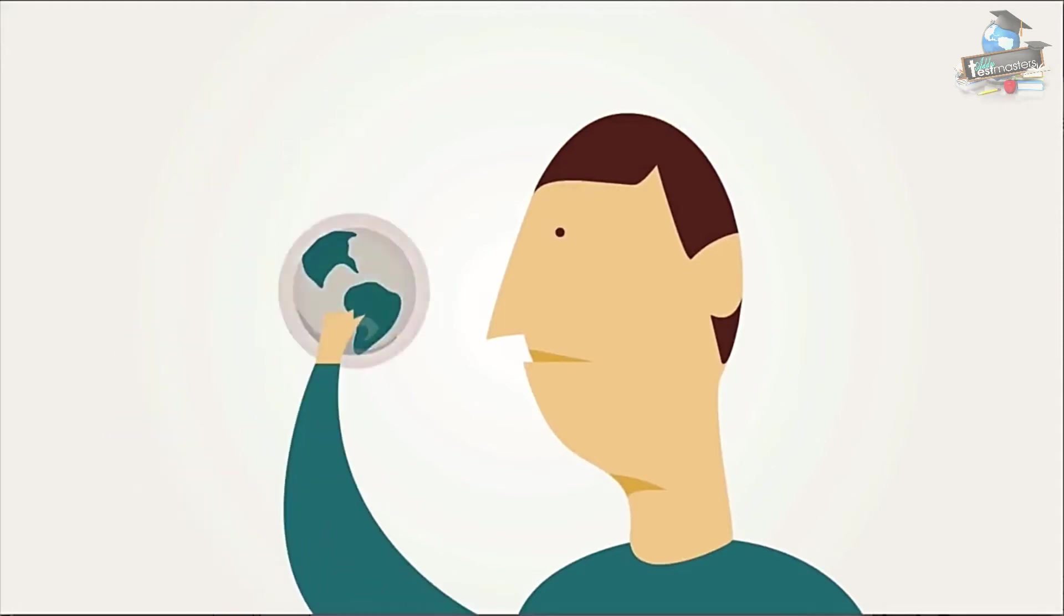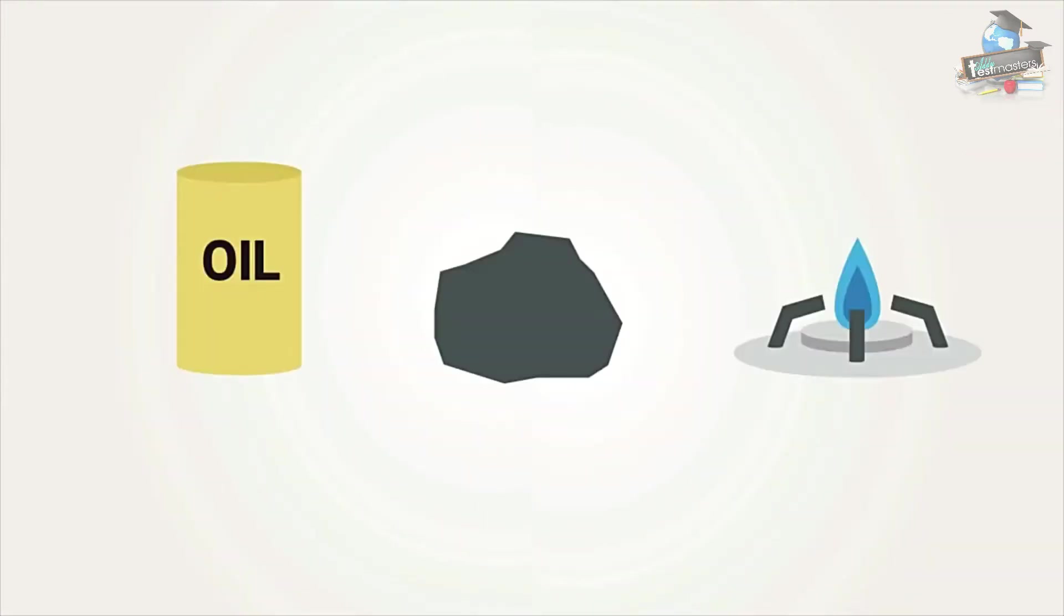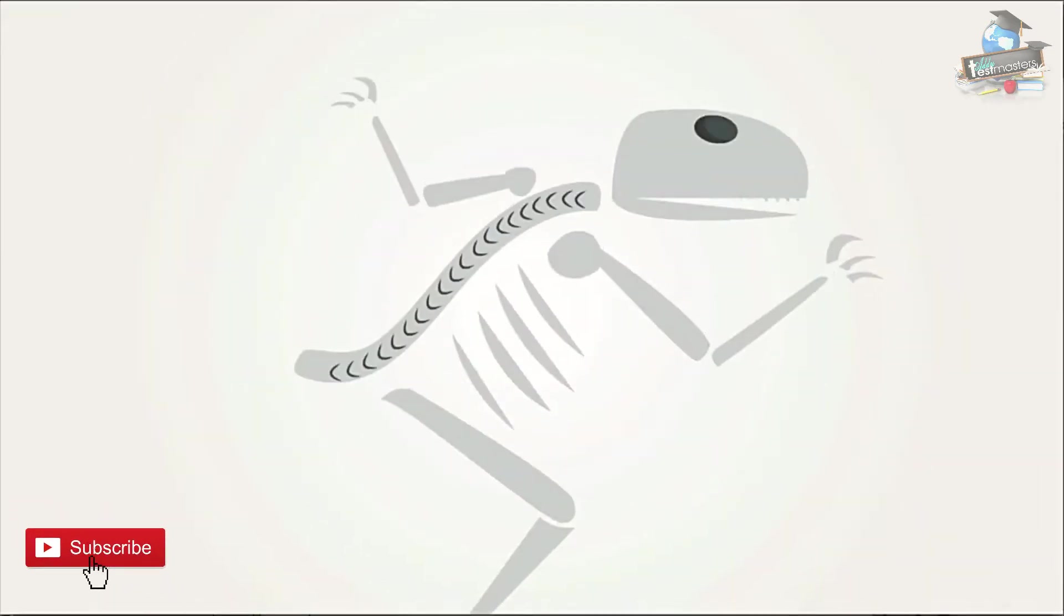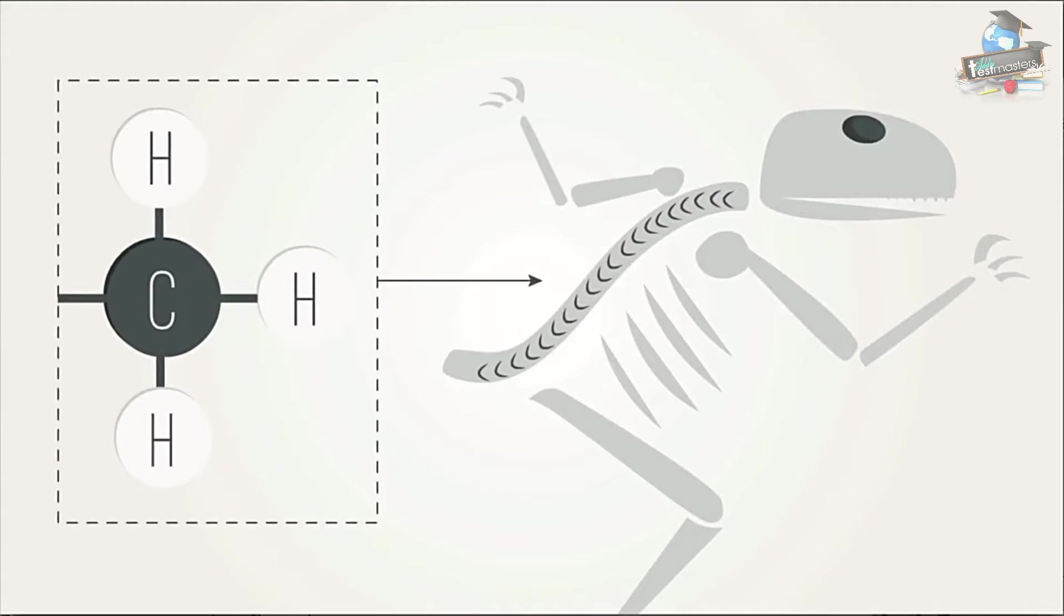To understand human induced climate change or global warming we need to understand something about burning fossil fuels. Fossil fuels like oil, coal and natural gas are the remains of living things from millions of years ago. They're mainly composed of carbon with varying amounts of hydrogen.